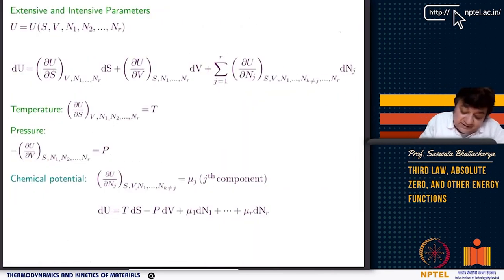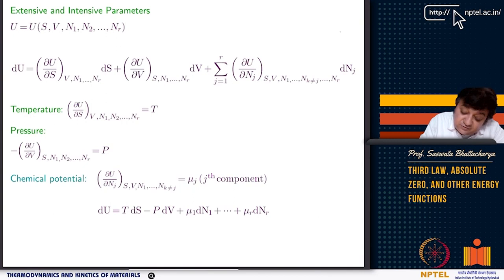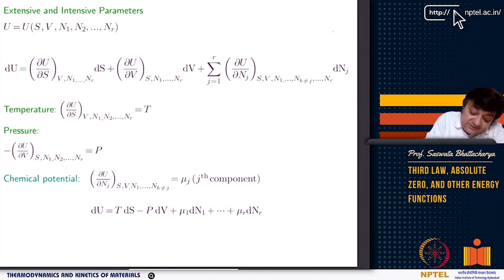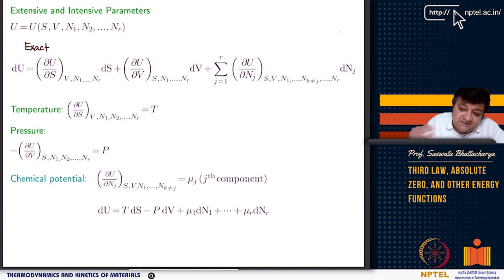Since S is continuous and differentiable and a monotonically increasing function of u, by continuity and differentiability you can write u as a function of S, V, and N. Because S, U, and other thermodynamic quantities depend only on the state of the system — on initial and final states, not on the path — they are all exact differentials.